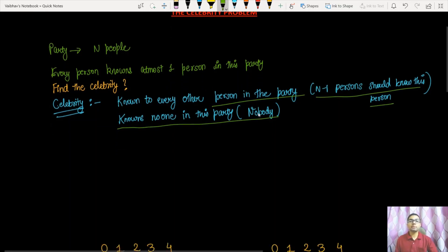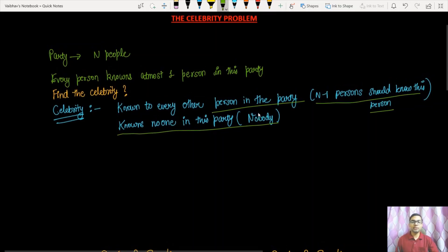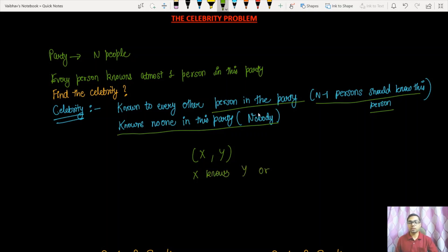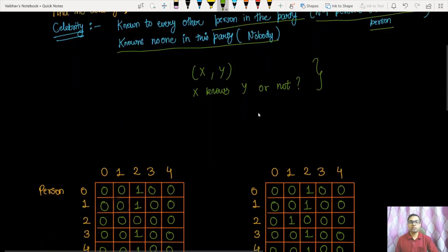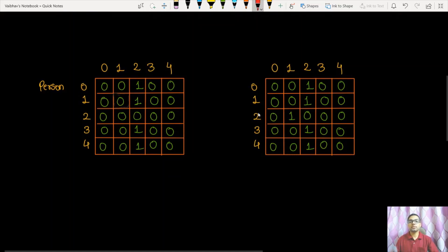We need to do this using a minimum number of questions. A question means asking whether person X knows person Y or not. We need to ask the minimum number of questions to determine whether a celebrity is present in this party — essentially we need to optimize our solution. Let's come to the sample cases.